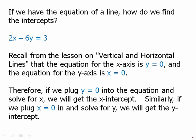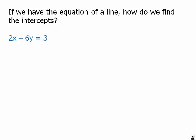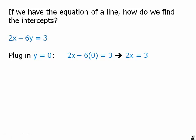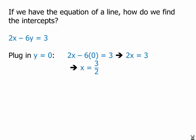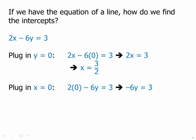Similarly, if we plug x equals zero into the equation, we're automatically going to get a point on the y-axis — in other words, the y-intercept. So first we solve for the x-intercept by plugging in y equals zero. We get 2x equals three divided by two, so x equals three halves — that's the x-intercept. Then plugging in x equals zero and dividing by negative six gives us negative one half, which is the y-intercept.